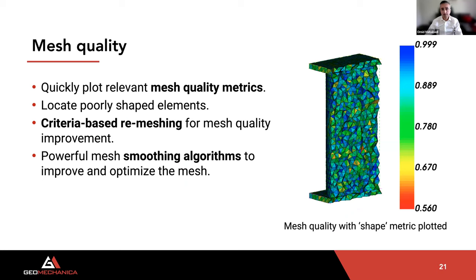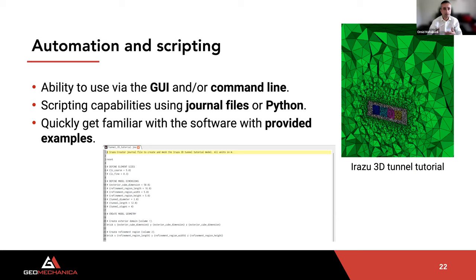In terms of mesh quality, you can quickly plot relevant mesh quality metrics such as shape and size, locate poorly shaped elements, perform criteria-based remeshing to improve mesh quality, and use smoothing algorithms to optimize the mesh. For automation and scripting, you can use the software via the standard graphical user interface or the command line. Scripting capabilities allow you to automate everything, and you can use Python for geometry creation, with various Irasu tutorials provided to quickly get you familiar.